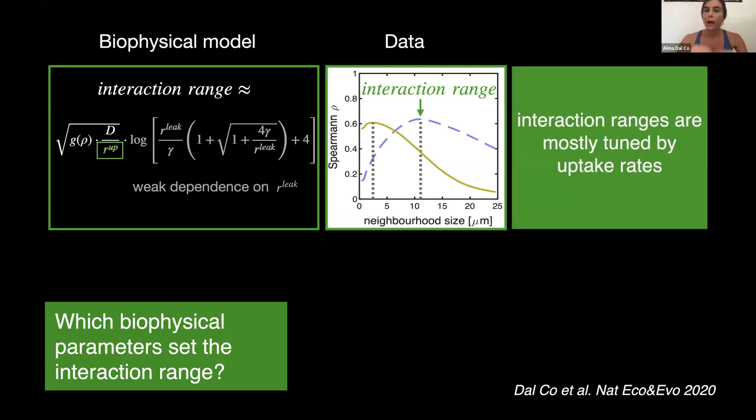So to have an intuition of what's going on, you can think that a molecule that is released by a producer cell doesn't travel very far if the uptake rates are very high, which means that the interaction that this molecule mediates, it's a short-range interaction. So short-range interactions are due to high uptake rates of amino acids.